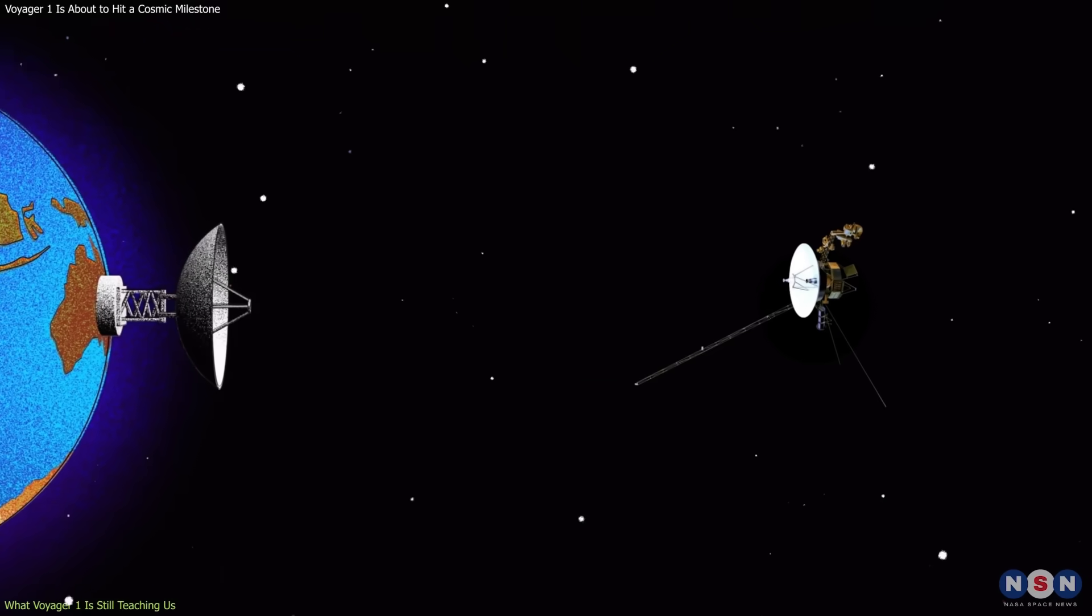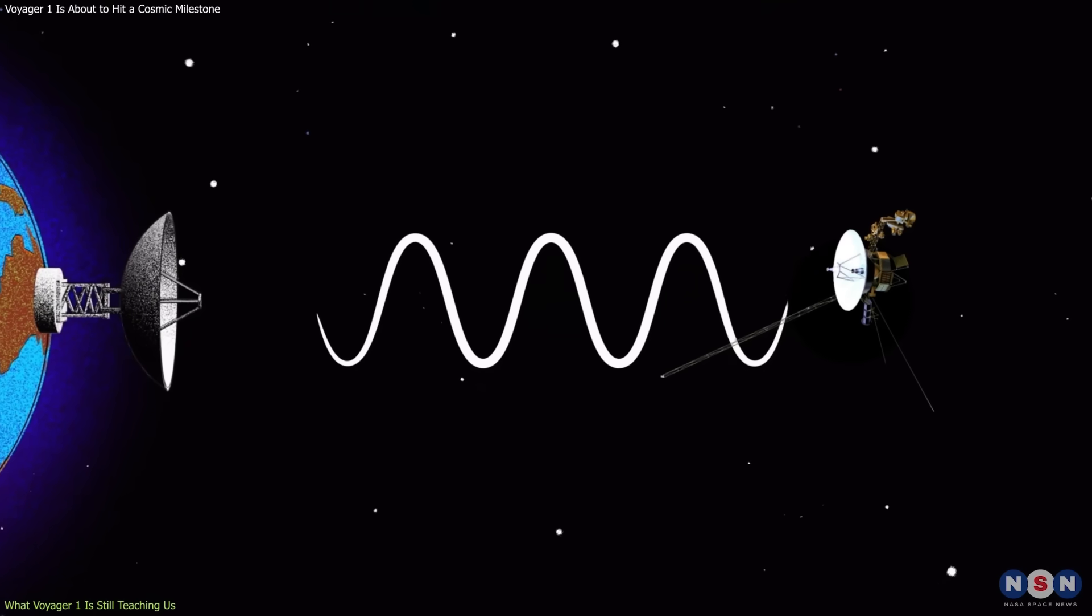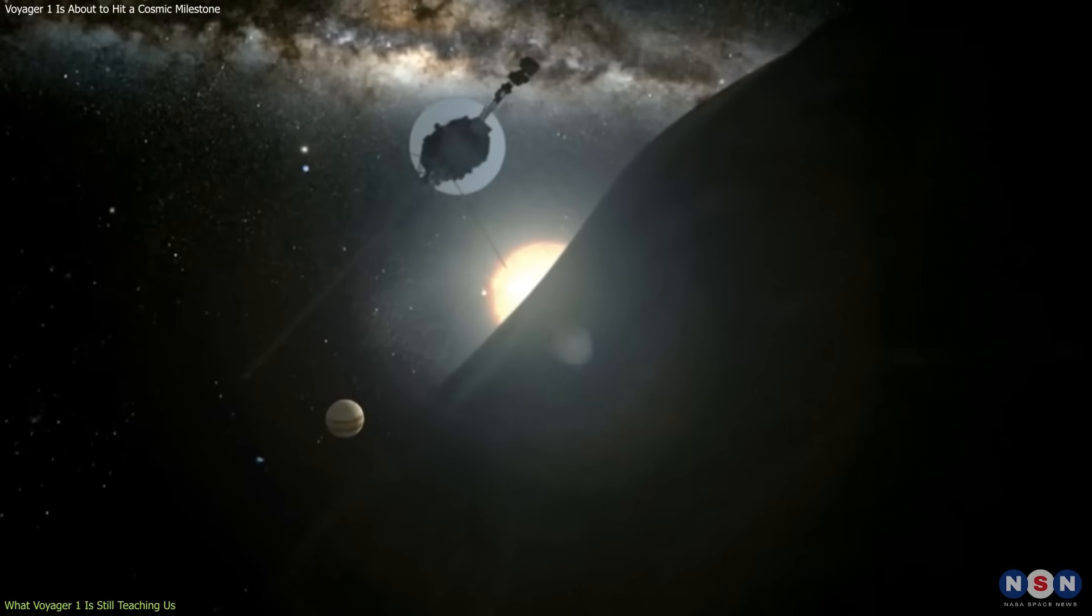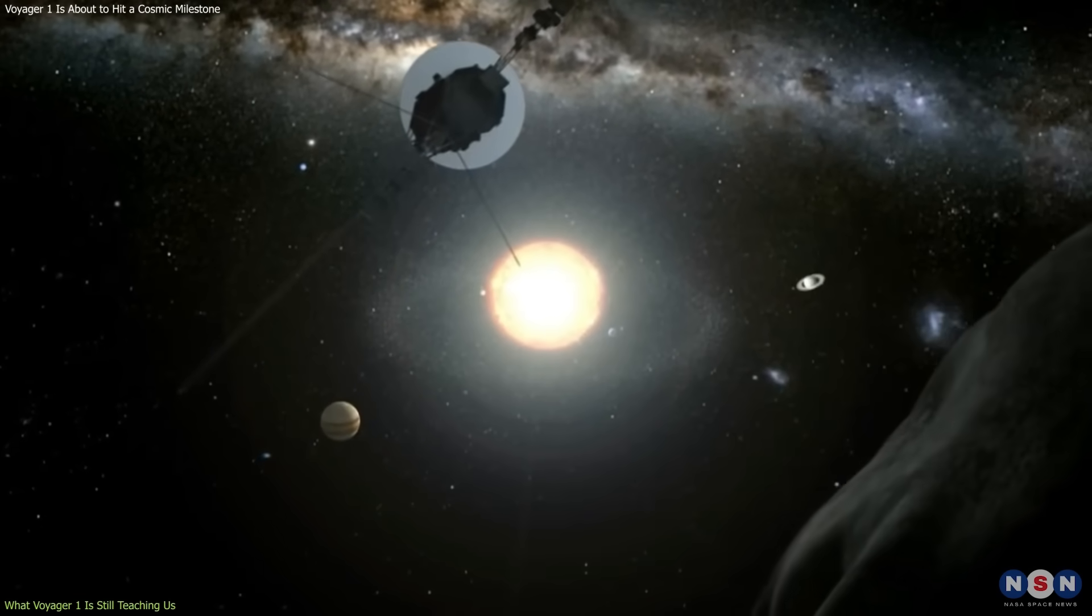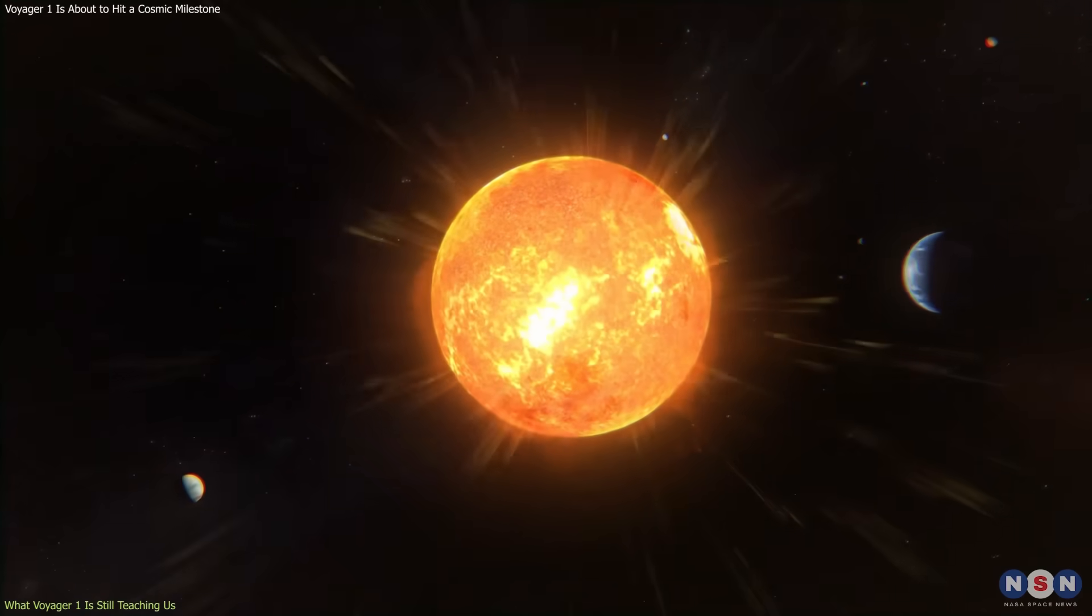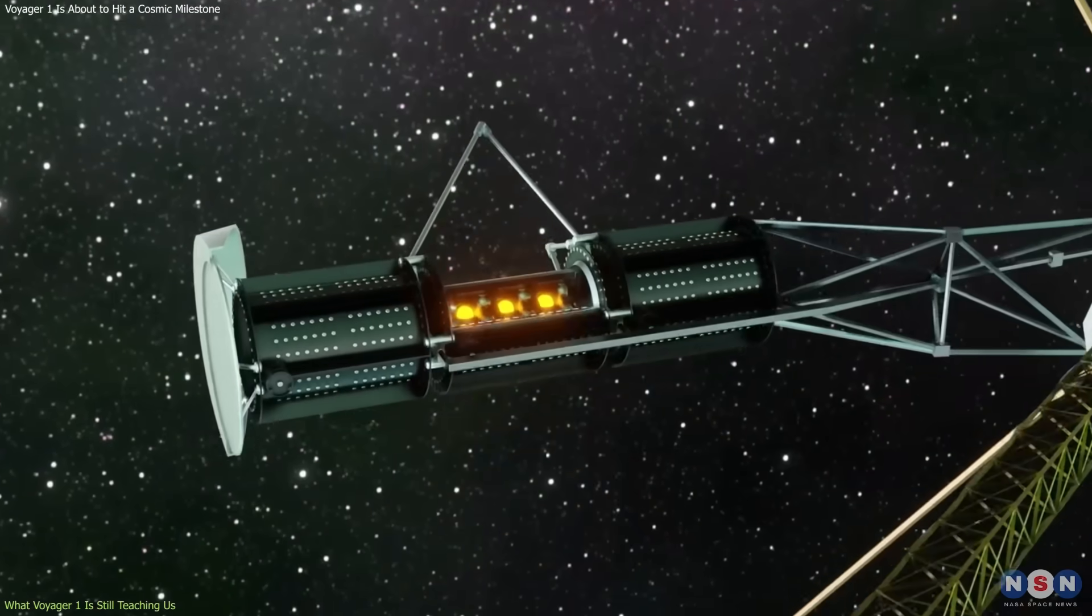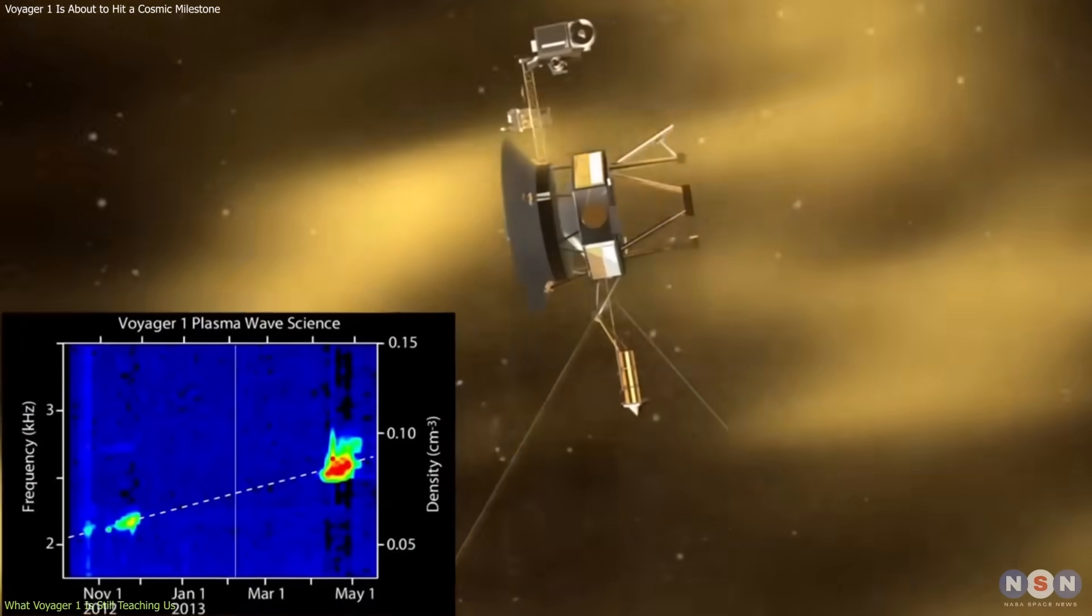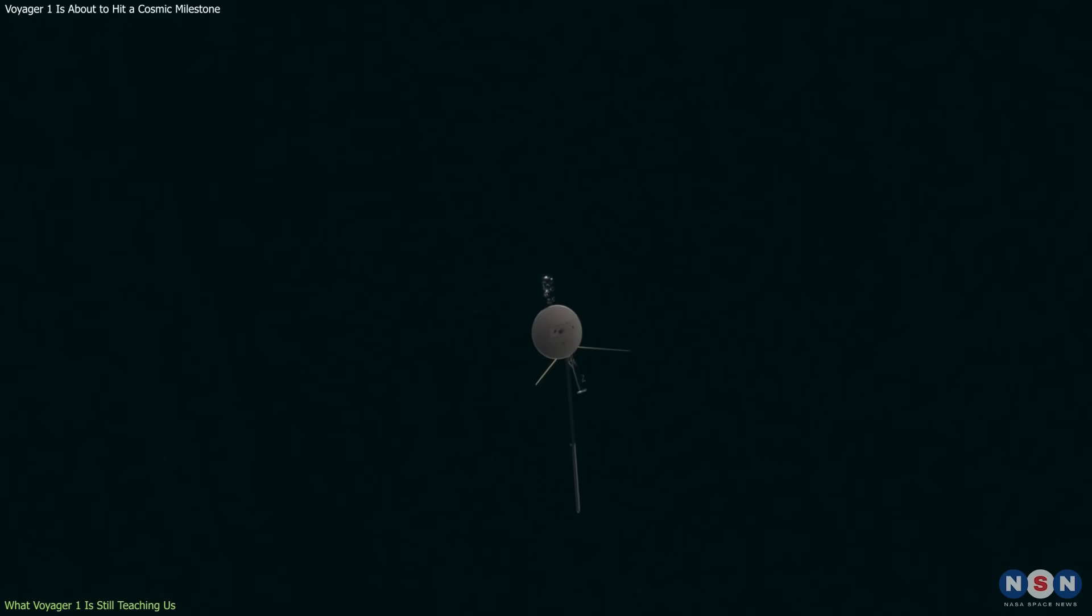Still, as of 2025, Voyager 1 continues to collect and send valuable data from a region no other spacecraft has reached. It acts as a single point of truth for studying the edge of the sun's influence, a natural laboratory for testing how stellar winds interact with the interstellar medium. Even with diminishing power, the remaining sensors, particularly those for cosmic rays and plasma, keep producing scientifically useful readings. Every signal that returns from that distance reinforces what the mission has always represented: persistence, precision, and a willingness to keep listening, no matter how faint the reply.